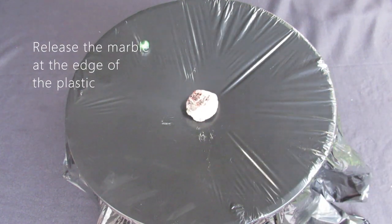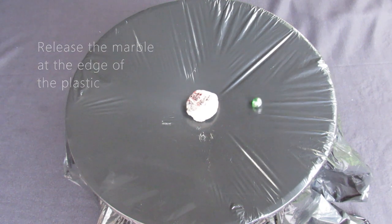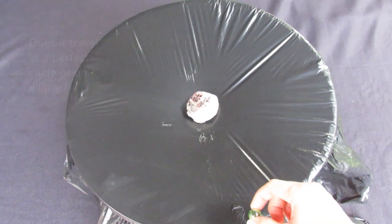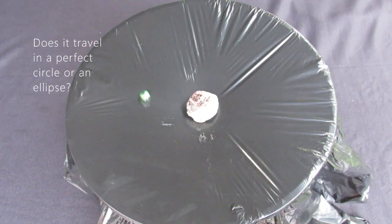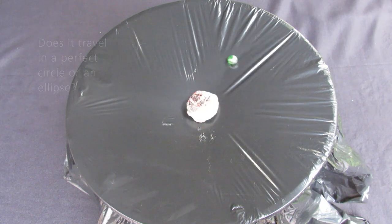Gently release the marble around the edge of the plastic. Does it go straight over the edge or not? Notice the path taken by the marble. Does it travel in a perfect circle around the rim of the bin or does it travel in an ellipse? Planets orbit the sun in elliptical orbits.